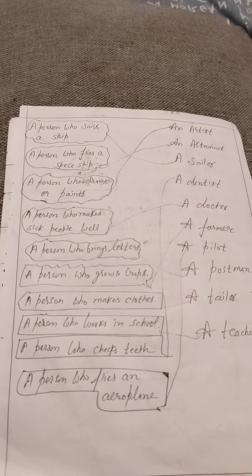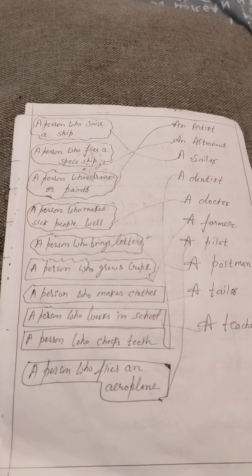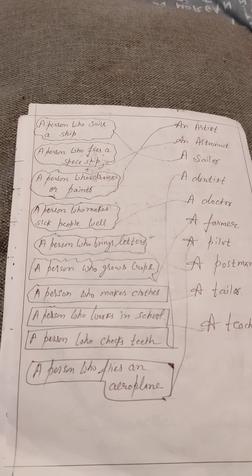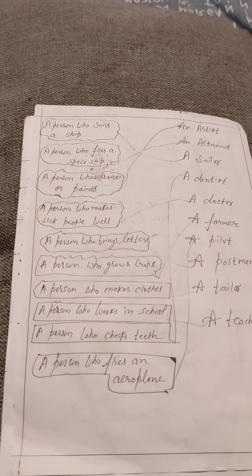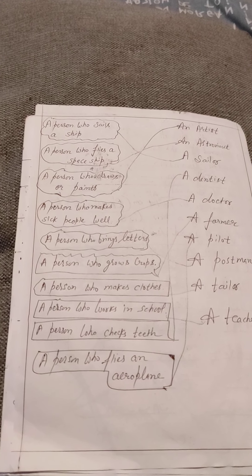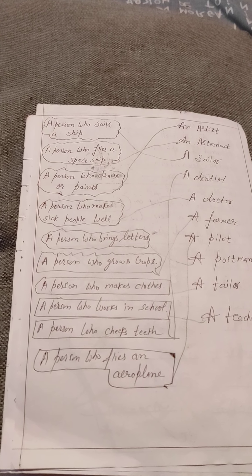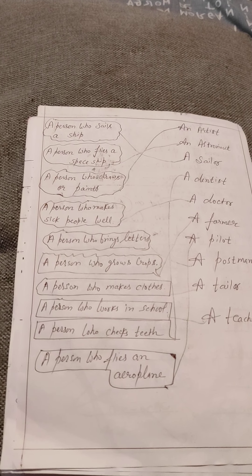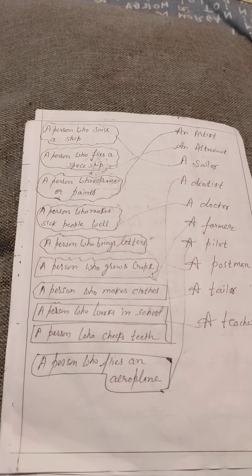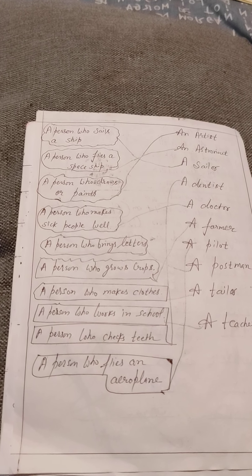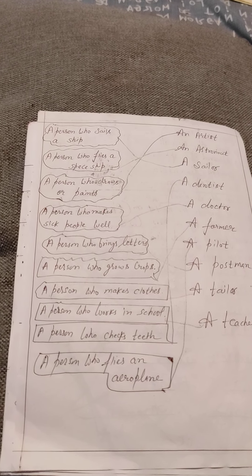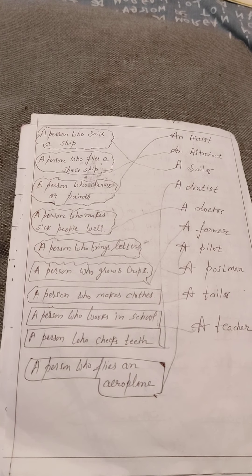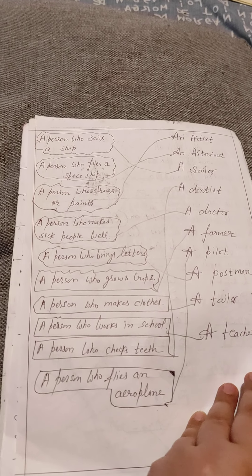Now it's a matching exercise. Match the descriptions: a person who sails a ship, a person who flies a spaceship, a person who draws or paints, a person who makes sick people well, a person who brings letters, a person who grows crops, a person who makes clothes, a person who works in a school, a person who checks teeth, and a person who flies an aeroplane.